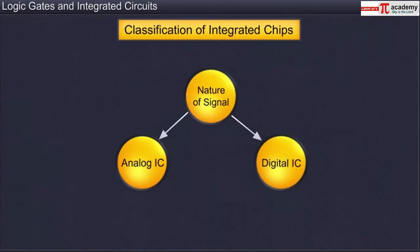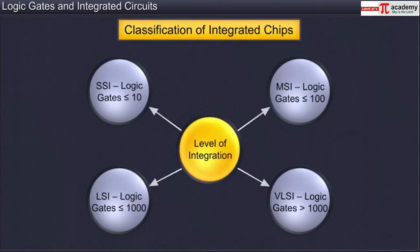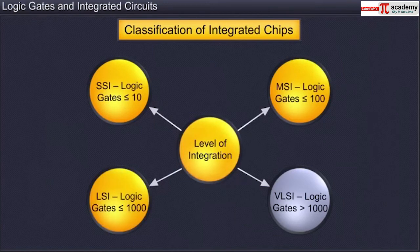Depending on the nature of the signal it can process, an IC can be an analog IC or a digital IC. A digital IC contains the logic gates we discussed before. Depending on the number of circuit components built on it, an IC can be classified as a Small Scale Integration IC, Medium Scale Integration IC, Large Scale Integration IC, or a Very Large Scale Integration IC.